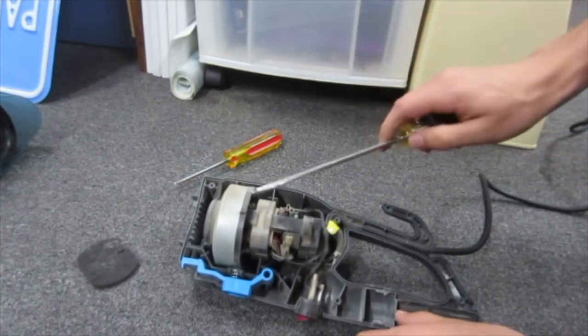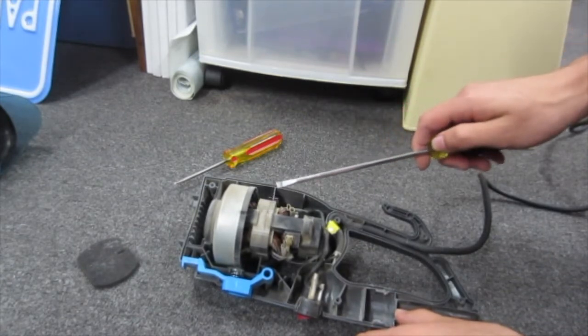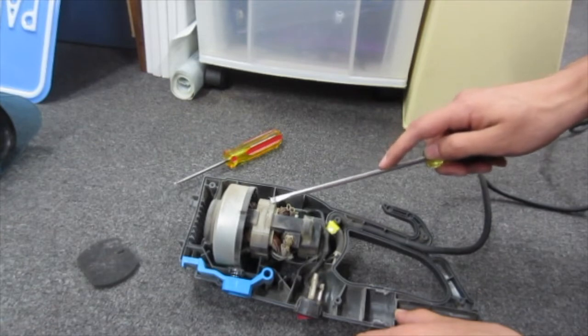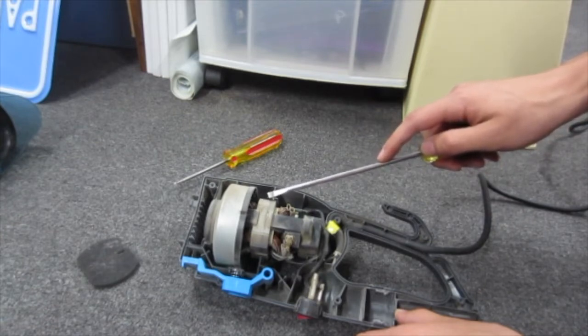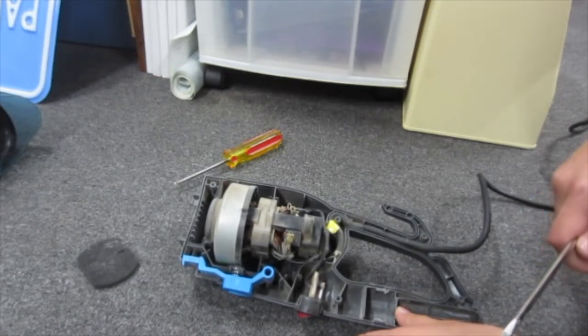But anyways, here is the motor. This is a DC brush motor. And it probably is around, this one's, if I had to guess, I'd say it's around one to two horsepower. They spin really fast, like around 30,000 RPM, maybe more. That was just my rough calculation.